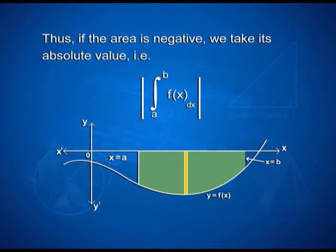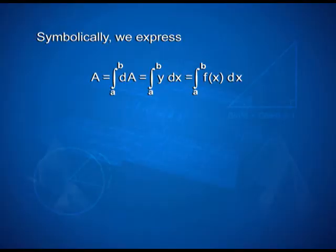For example, we have a curve below the x-axis here. The y-axis is shown and the curve is given by y = f(x), with x = a and x = b as the ordinates, and the strip is taken here. Symbolically, we express A = ∫a to b dA = ∫a to b y·dx = ∫a to b f(x)dx.